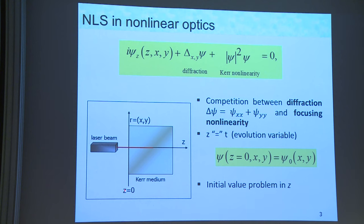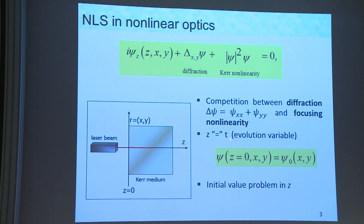We impose the initial beam profile at z equals zero. This is our initial condition, and the propagation is in z — so this is an initial value problem in z. Since this is a mathematical audience, most of the talk I'll call this t to make life easier. But there are some z left behind in the transparencies, so wherever you see z, it's t.